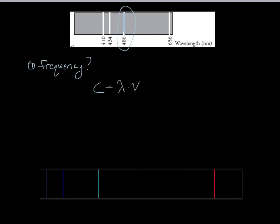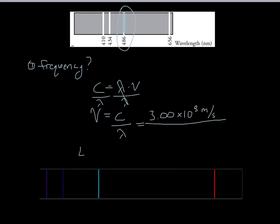We know what the speed of light is — it's always the same — so we can rearrange the equation and solve for frequency instead. We divide both sides by wavelength, which cancels it out, so frequency equals the speed of light divided by wavelength. We've got to make sure we convert 486 nanometers into meters by multiplying by 10 to the negative 9th, giving us 486 times 10 to the negative 9th meters.